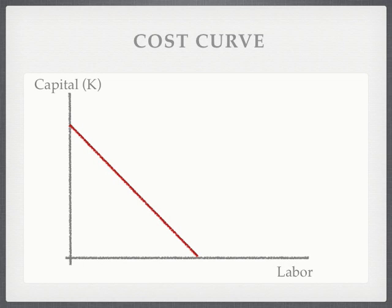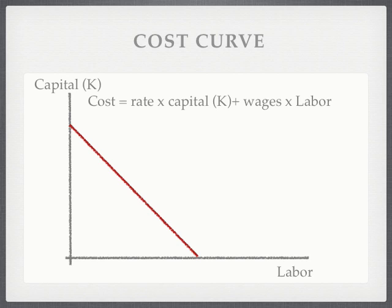Firms, just like individuals, have cost curves or budget lines. What that does is constrain production — you can only produce as much as you have money or labor for. The cost curve, the straight line we see here, has the equation: cost is equal to the rate times capital plus wages times labor.